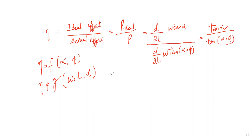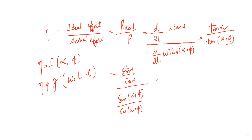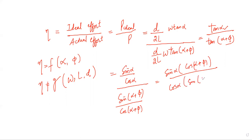We can modify the efficiency equation further. Writing tan in terms of sin and cos: η = [sin(α)/cos(α)] / [sin(α + φ)/cos(α + φ)], which becomes η = sin(α) × cos(α + φ) / [cos(α) × sin(α + φ)].